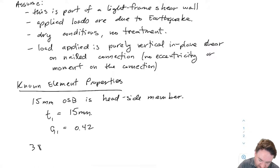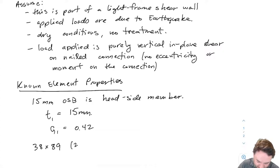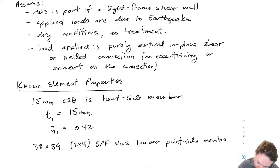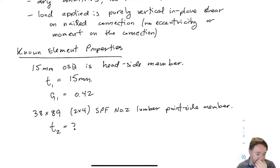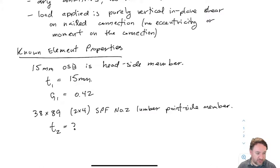We have our 38x89 stud. T2 is not the thickness of the stud — T2 is the penetration of the nail into the stud. We can't figure this out yet because we haven't decided how long the nail is, so this is something we still need to determine.